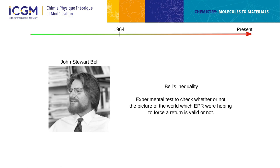Moving back to the quantum world: John Bell — you may have heard about him in relation to recent experiments and last year's Nobel Prize — developed inequalities that should be fulfilled if the world were classical. He designed an experimental test to see if the EPR paper could be correct, or if quantum mechanics was really real.